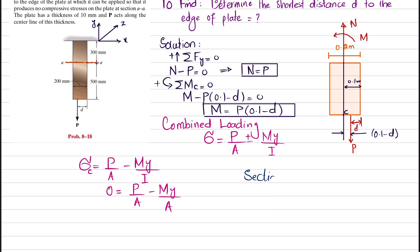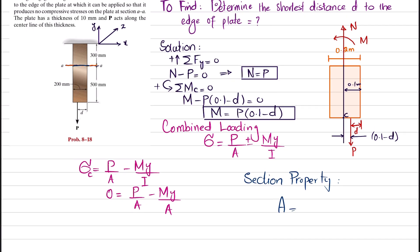For section properties, we have to find area and moment of inertia. The plate has width 200 mm and thickness 10 mm. Area equals 0.2 times 0.01 meter, which gives 0.002 square meters.